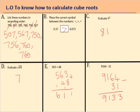On the board are your 6 answers to the starter. Please mark them in green pen, correct any you may have made a mistake on, and write down the correct solutions if you did get it wrong. Well done if you got 6 out of 6 — that's really impressive.